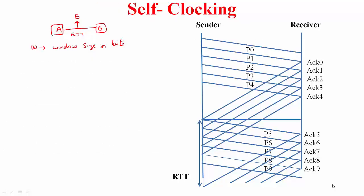Let us look at sliding window at the link layer. You are employing sliding window only between two nodes A and B, and the link interconnecting them has a bandwidth B — this is the link rate — and the round trip time between these two is RTT. W is the window size in bits. The first question is: what would you like W to be? We saw this before — you want W to be the bandwidth-delay product to achieve maximum throughput.